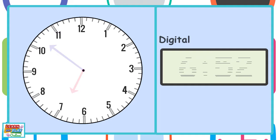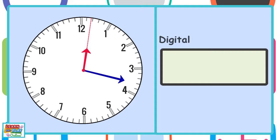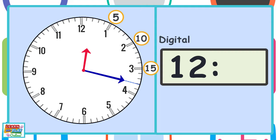Let's try one last time. The hour hand is past the 12, so it is 12 something. Now let's find out how many minutes has passed the hour: 5, 10, 15, 16, 17, 18. So the time is 12:18.